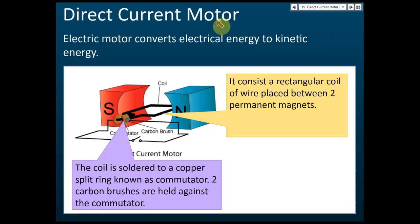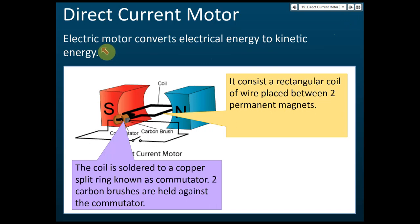Direct current motor. An electric motor converts electrical energy to kinetic energy. We give electrical energy to the motor, and the motor will change this electrical energy to kinetic energy and make the motor rotate.